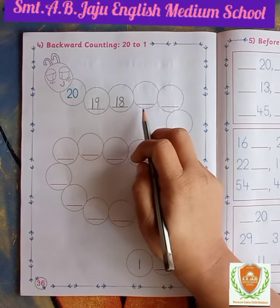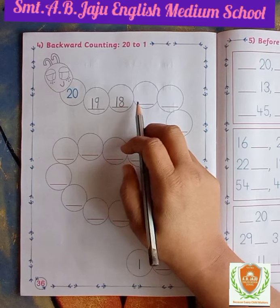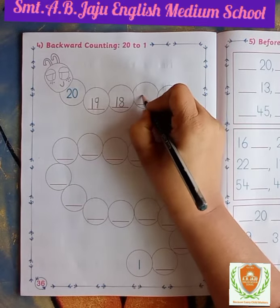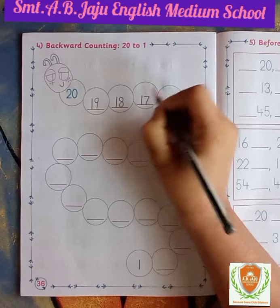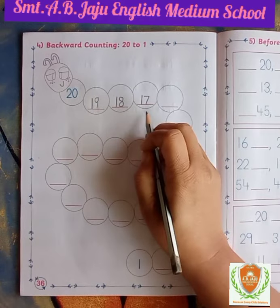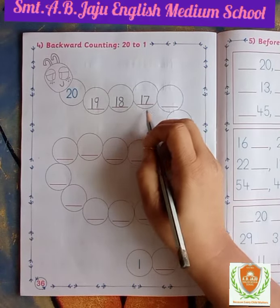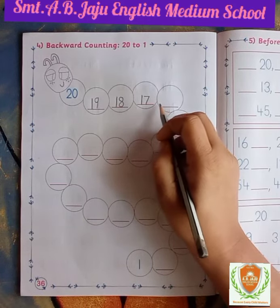After 18 in backward, which number will become? 17. Write down first 1, then write down 7 — this is 17. Okay, now next after 17, which number will become?